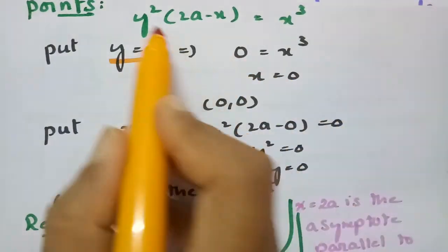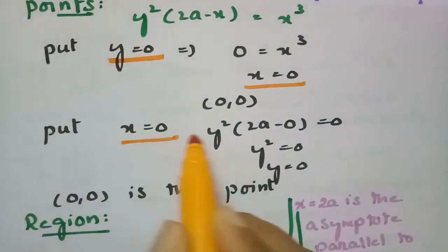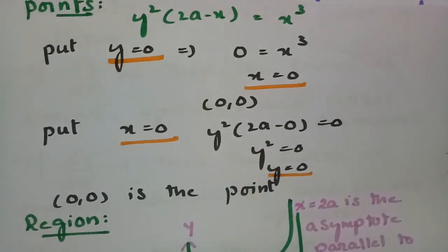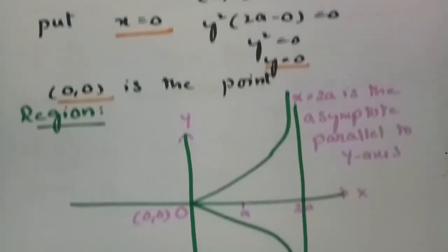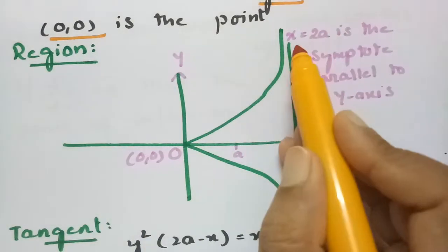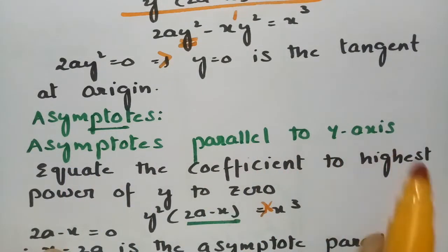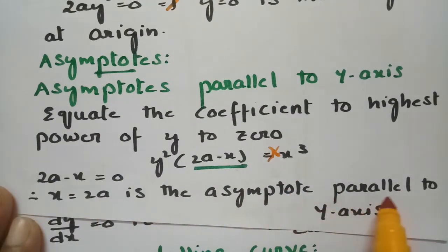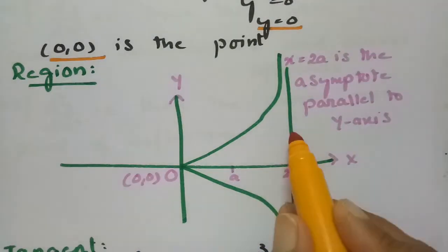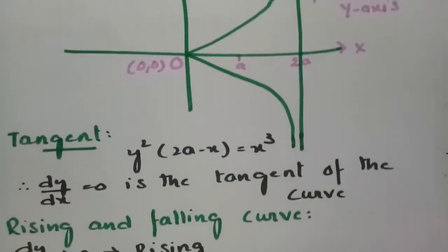Next, points: keeping y = 0 gives x = 0, and keeping x = 0 gives y = 0, so the origin is the only point. The asymptote x = 2a is then plotted as a straight line parallel to the y-axis in the figure.